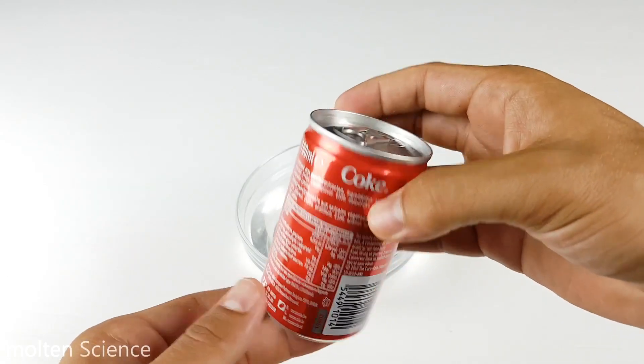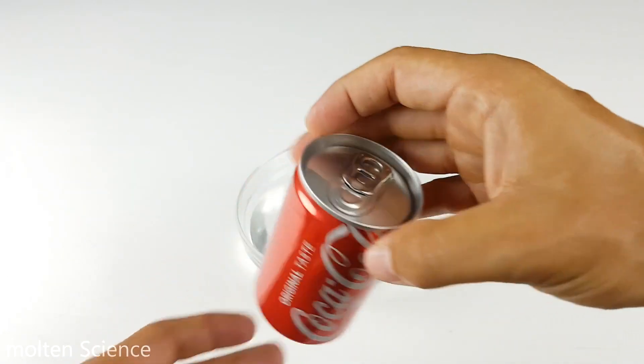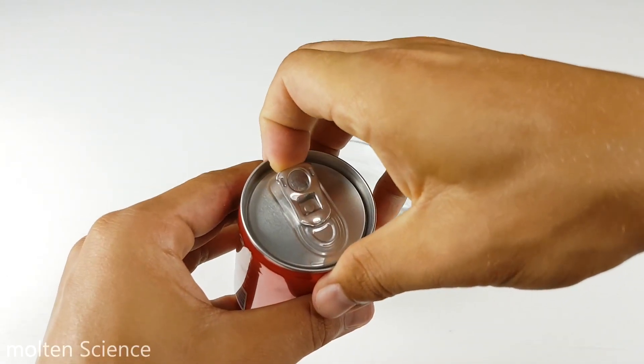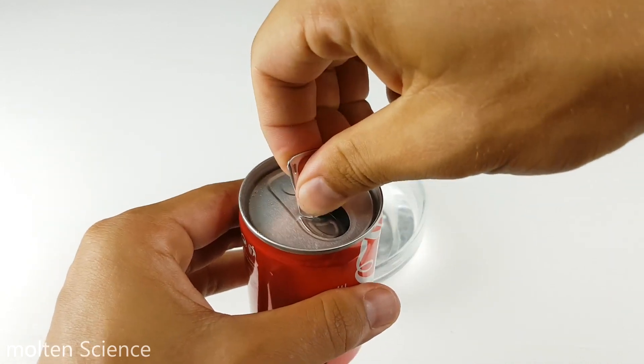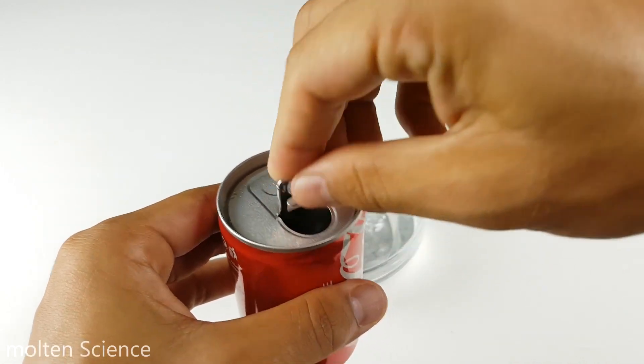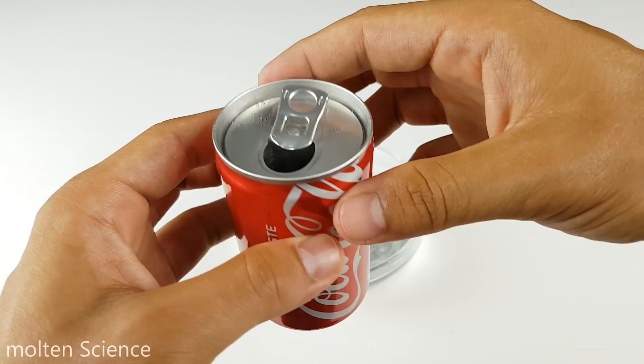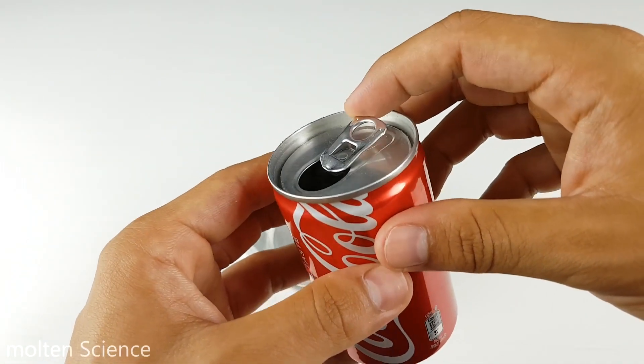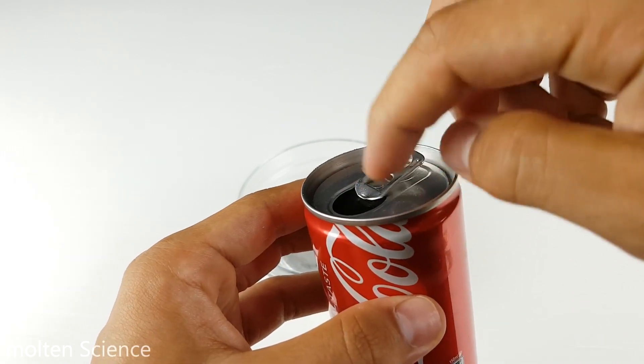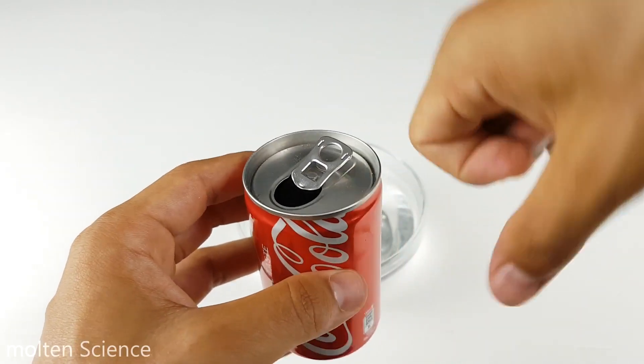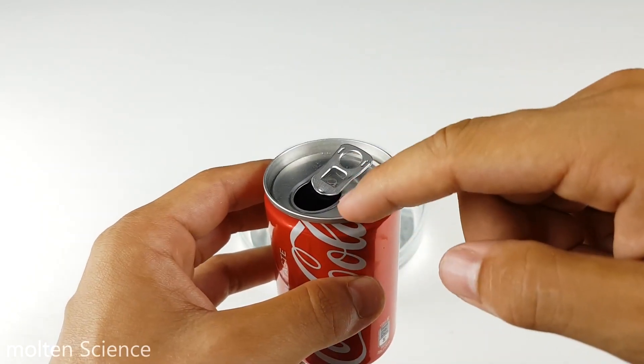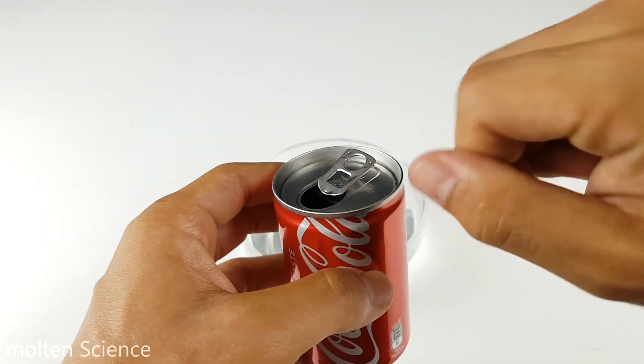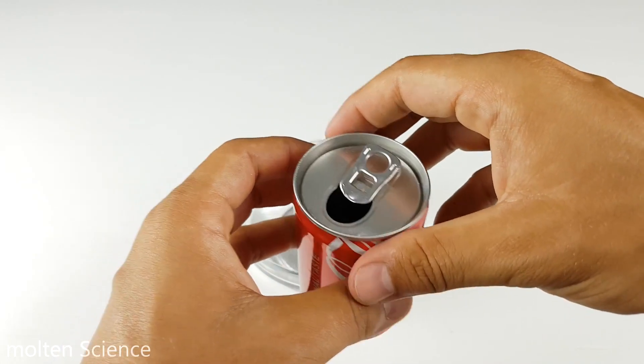But first we have to open it, so let's do that first. There's only one problem. I don't think the camera can see it, but the lid, when you open it, it turns inside. And I don't want to have that in my mold. So I have to press it up a bit.